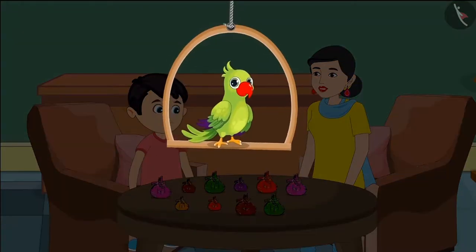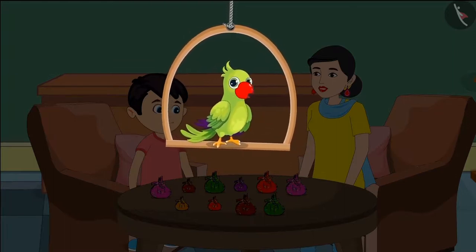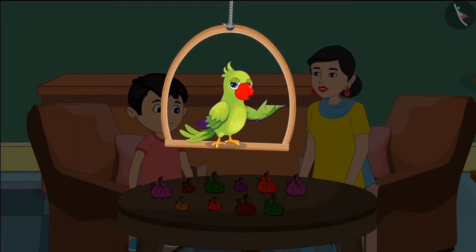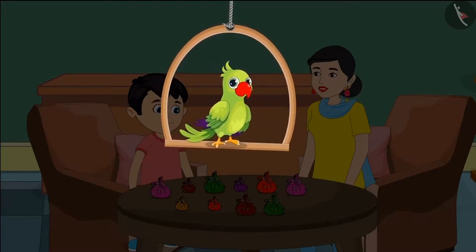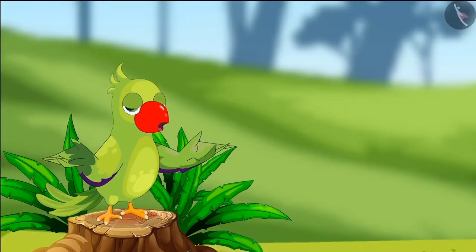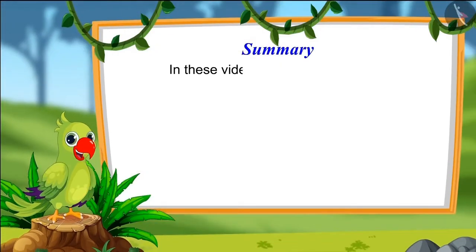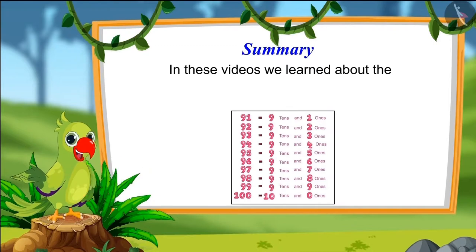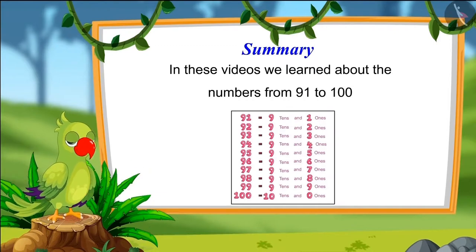Children, did you see what mistake Chotu made? You all should not make such a mistake. We should keep this in mind while making groups of ten and counting that each group is made up of ten things. Groups made up of different numbers of things are not counted as tens. So children, that was all for today. In these videos, we learnt about numbers from 91 to 100. I hope you have understood this topic properly. Bye friends.